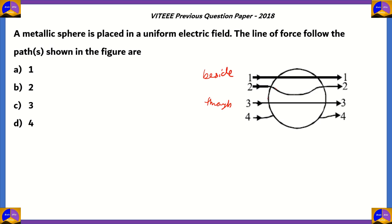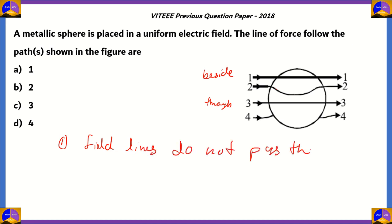If you are confused about one and three: three passes through the sphere and one is beside the sphere. So which of these four paths is the correct one? For that you need to understand electric field lines. An important point is that electric field lines do not pass through the sphere. So you can remove option three — it is incorrect because it passes through the sphere, whereas electric field lines cannot do that.